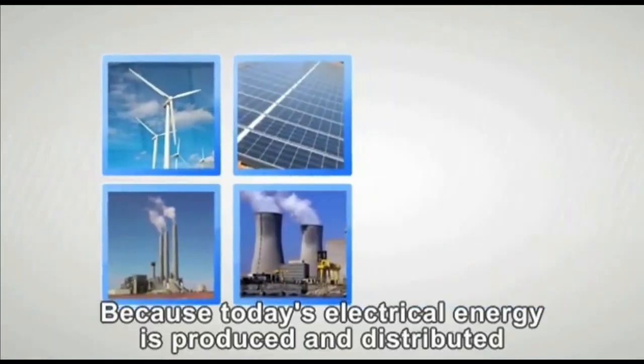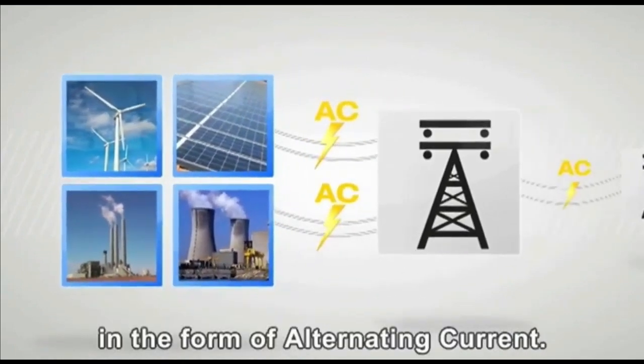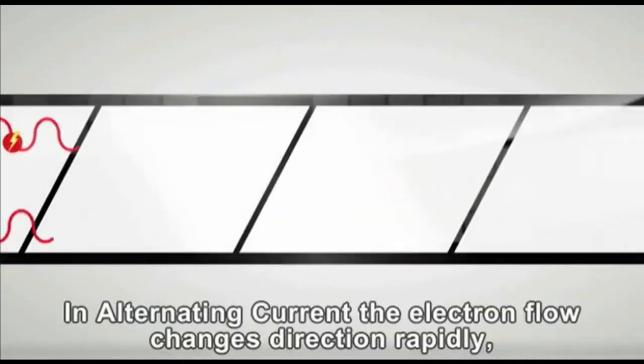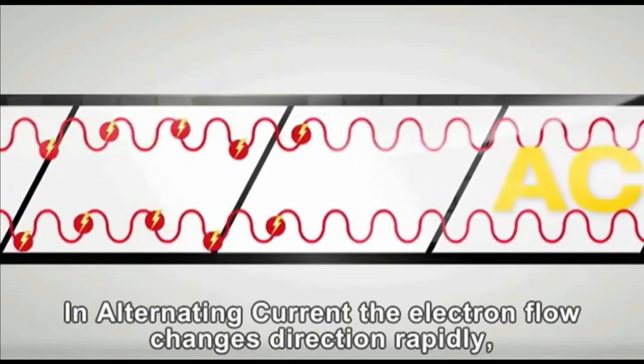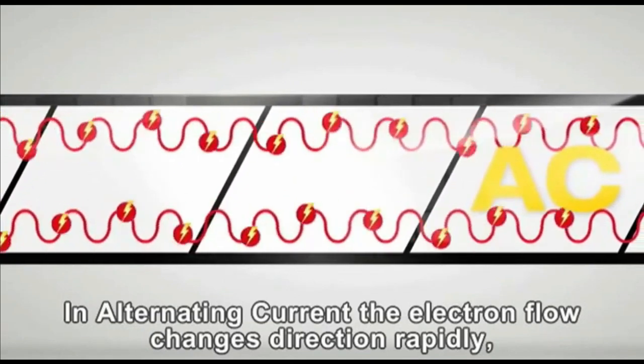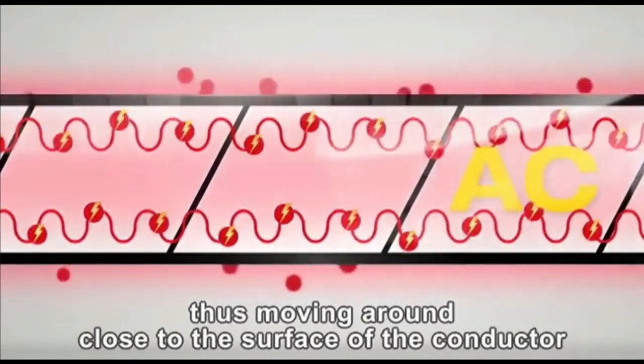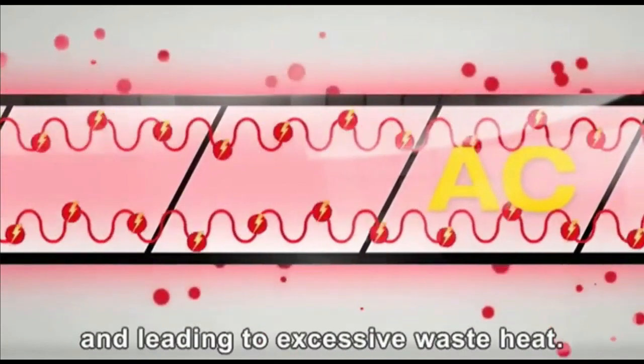Because today's electrical energy is produced and distributed in the form of alternating current. In alternating current, the electron flow changes direction rapidly, thus moving around close to the surface of the conductor and leading to excessive waste heat.